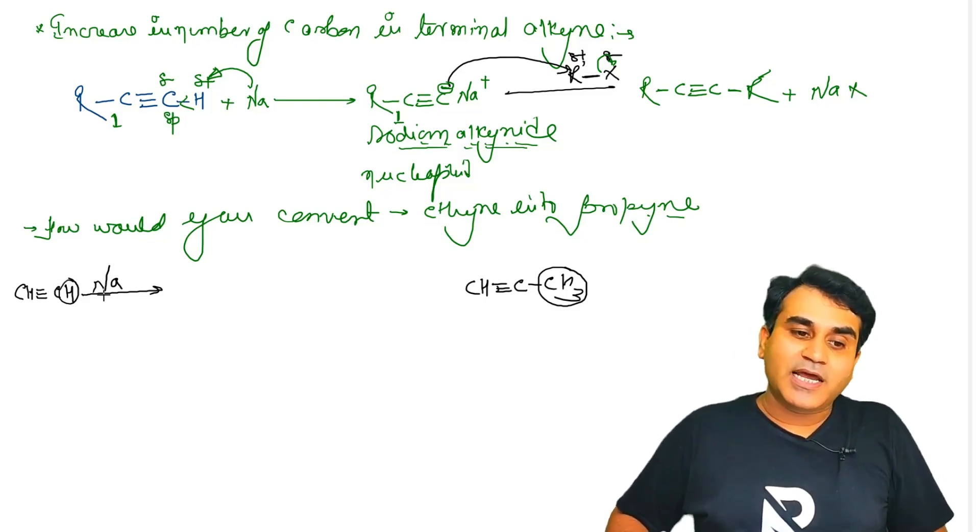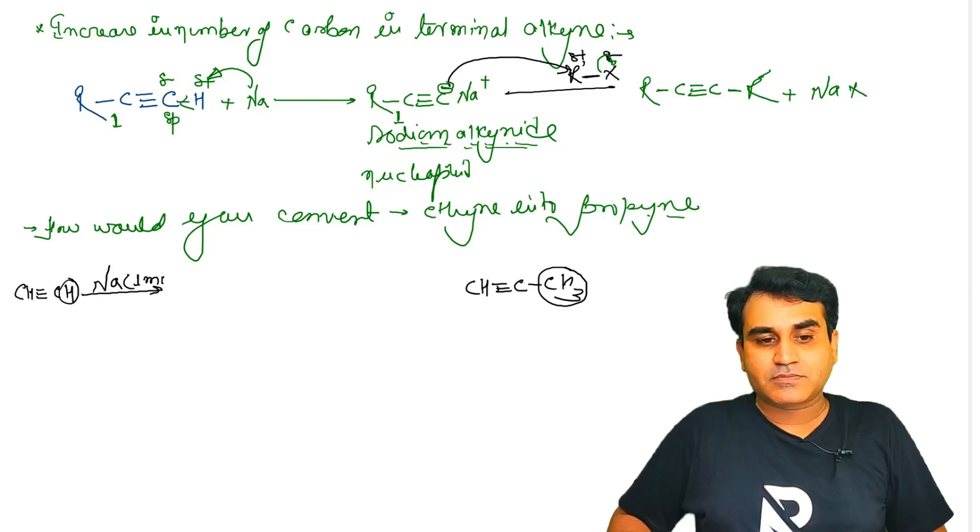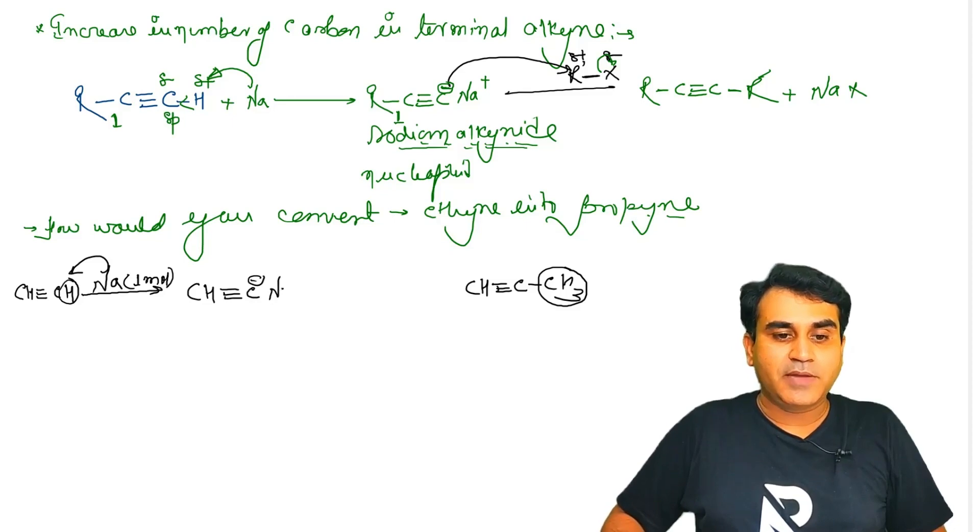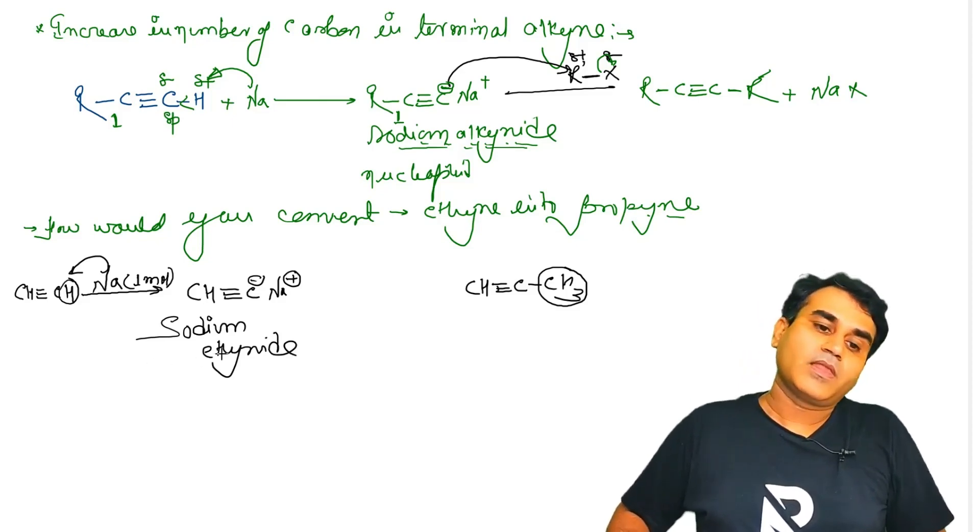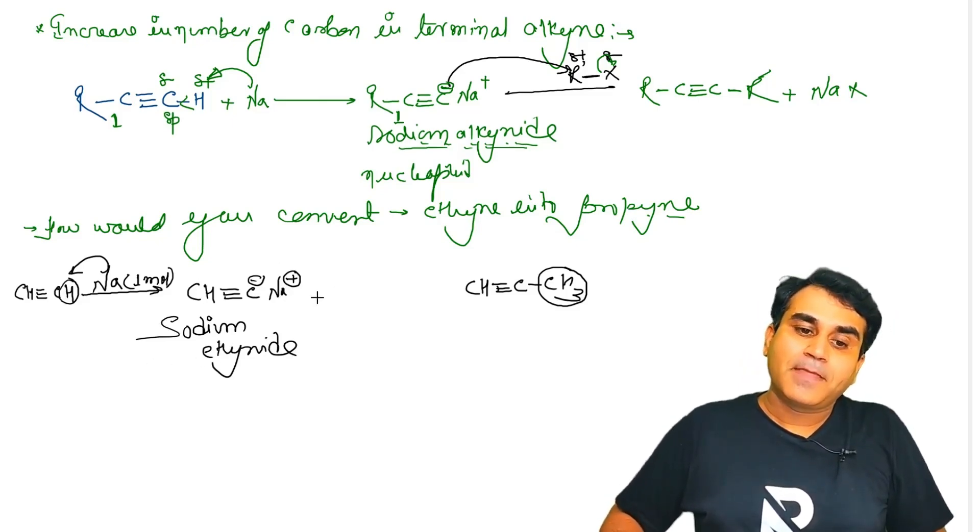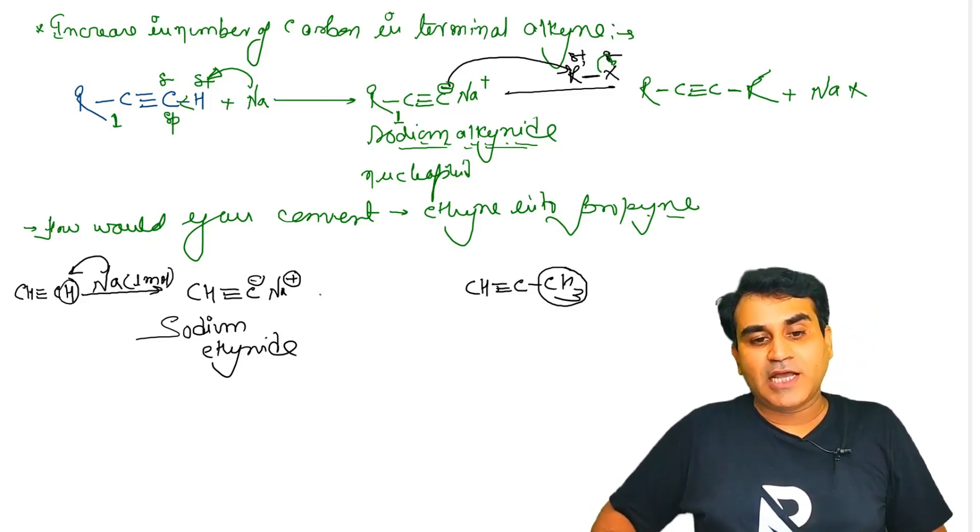Hum isko pehle alkyneide convert karenge by reacting with sodium metal. Terminal alkyne hai aur maine sirf one mole sodium liya hai. To vo ek hydrogen ko replace karega, humein milega CH≡C⁻ Na⁺. Ban gaya sodium ethyneide.